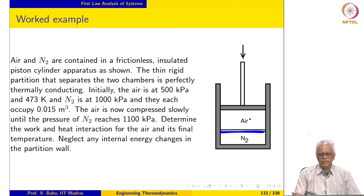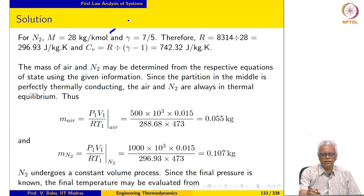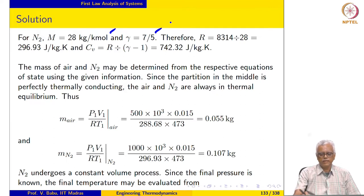The air is initially at 473 Kelvin and the nitrogen is at a higher pressure. Initial volumes are given. We now compress the air slowly until the final pressure of nitrogen is 1100 kilopascal. We are asked to calculate the work and heat interaction for the air and its final temperature. For nitrogen, the molecular weight is 28 and gamma is 7/5, so we can calculate Cv and R for nitrogen.